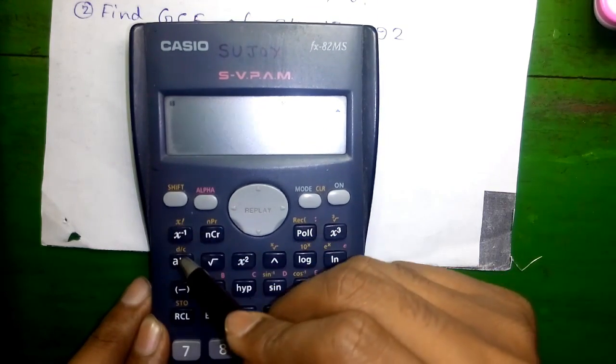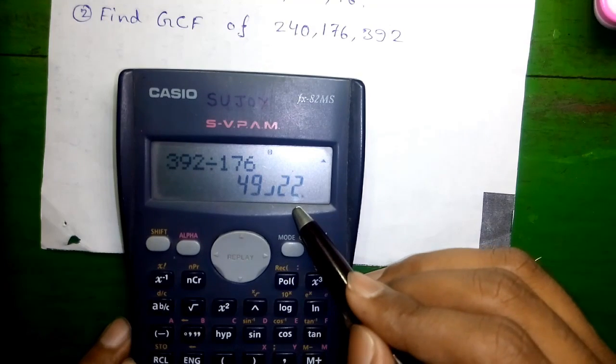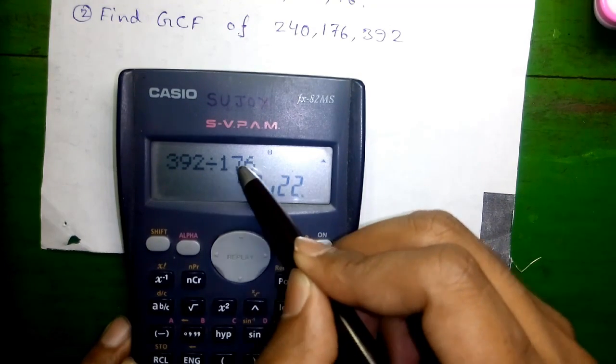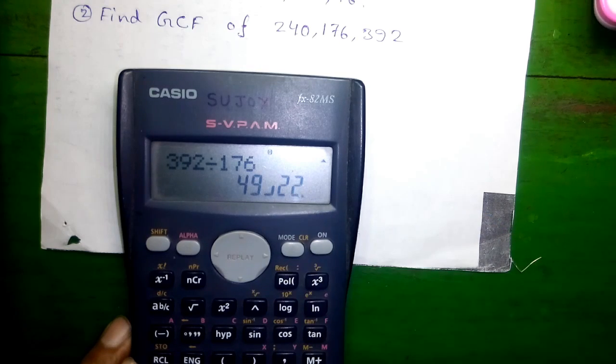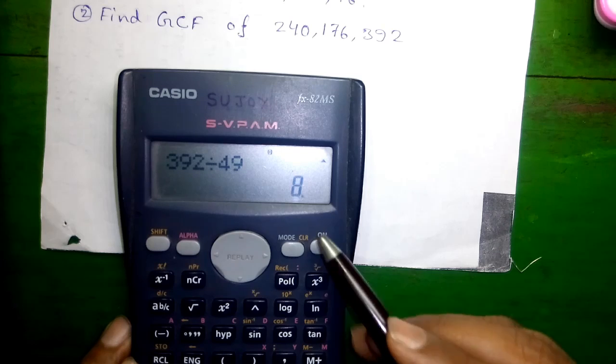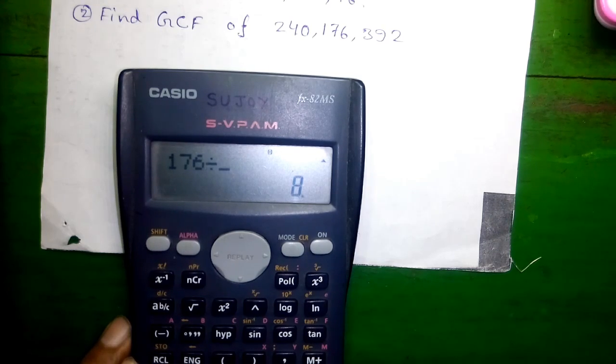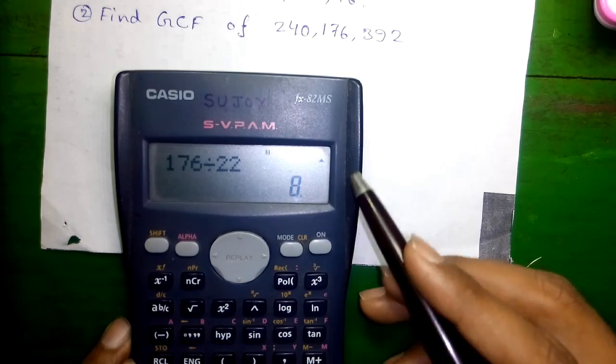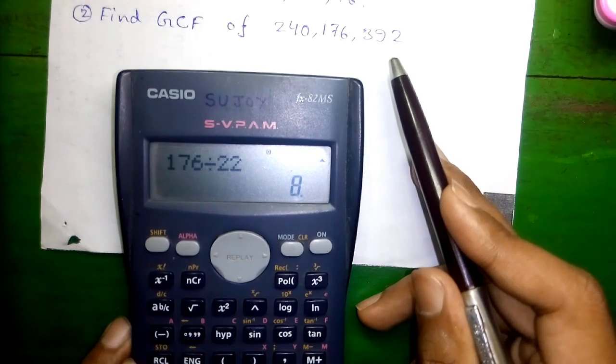Press SHIFT and this button. So we got 49 by 22. Now we will divide 392 by 49 and 176 by 22. We got 8, again 8. 8 is the common GCF of 176 and 392.